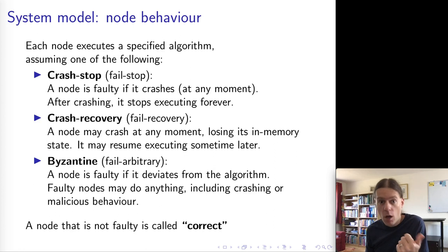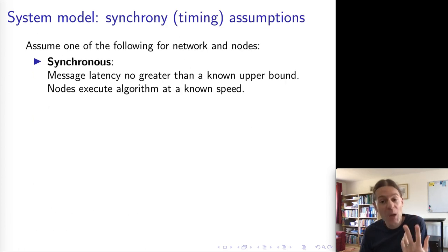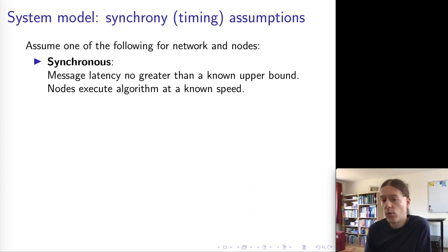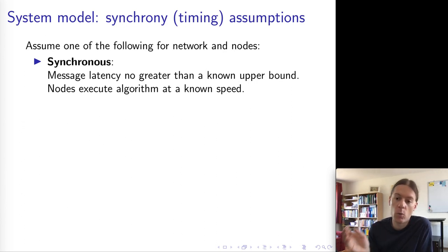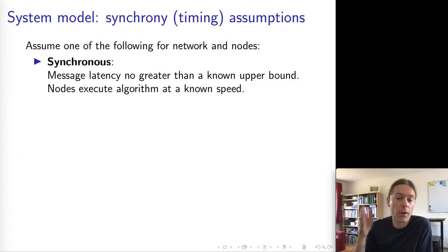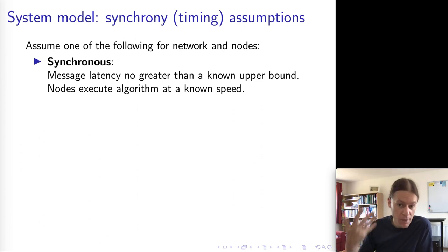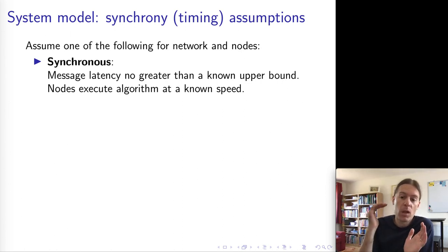We've talked about models for network and models for nodes. The third part is models for timing, and again there are three choices. The first is a synchronous system model, where we assume that basically everything takes a known length of time. When we send a message over the network, there is some maximum time after which the message will be either delivered or lost — no message will take longer than some maximum amount of time. Also, nodes always execute their code at a known speed, with an upper bound on how long each step takes. This is a very strong assumption.